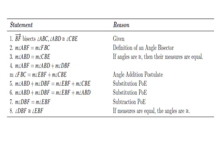Statement 6 then substitutes the measure of angle CBE for the equal measure of angle ABD, so that the measure of angle ABD plus the measure of angle DBF equals the measure of angle EBF plus the measure of angle ABD.